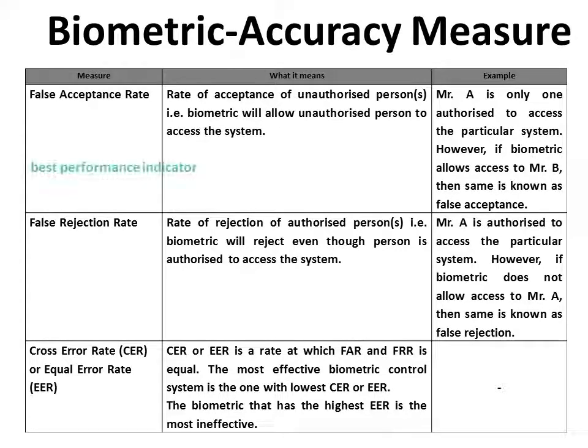When the question asks about the best performance indicator, the answer should be False Acceptance Rate. But if the question asks about the overall best performance, then we need to consider both false acceptance and false rejection, so the answer should be Cross Error Rate — the rate at which False Acceptance Rate and False Rejection Rate are equal.